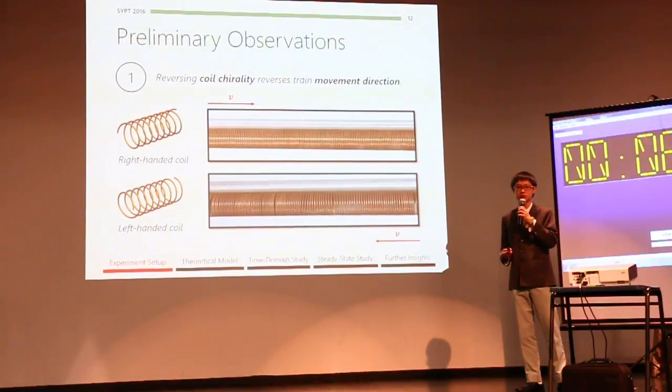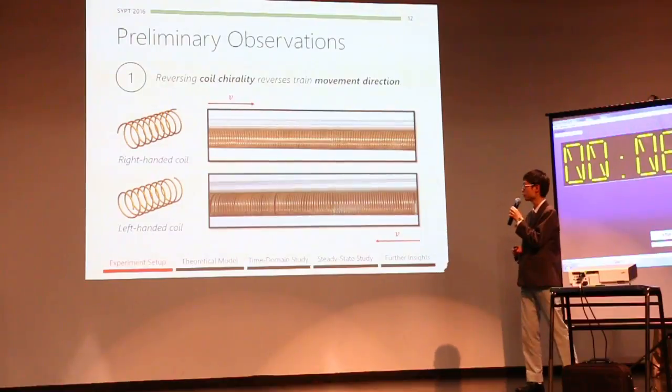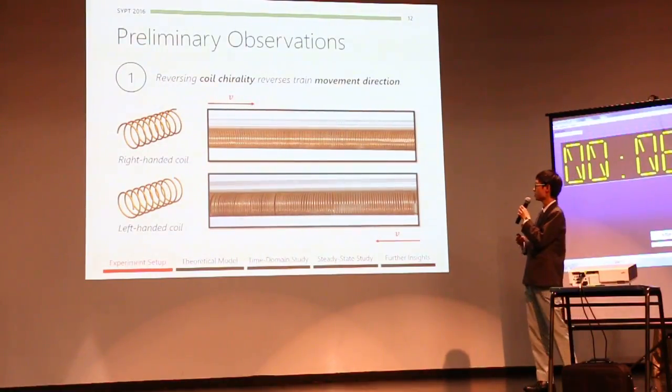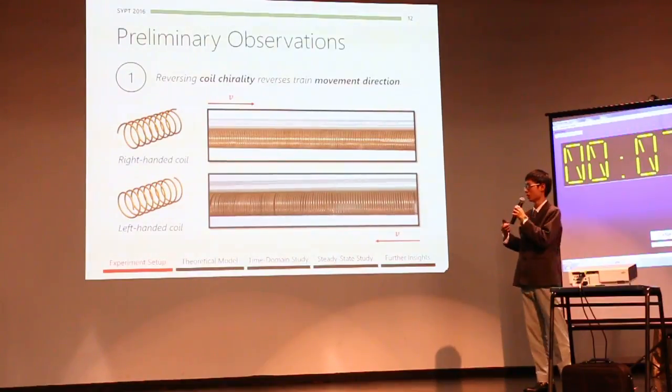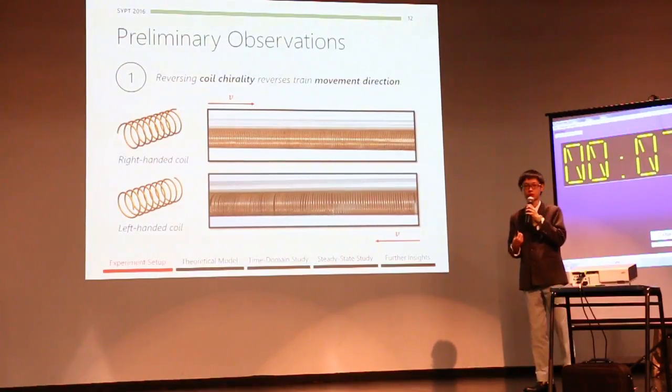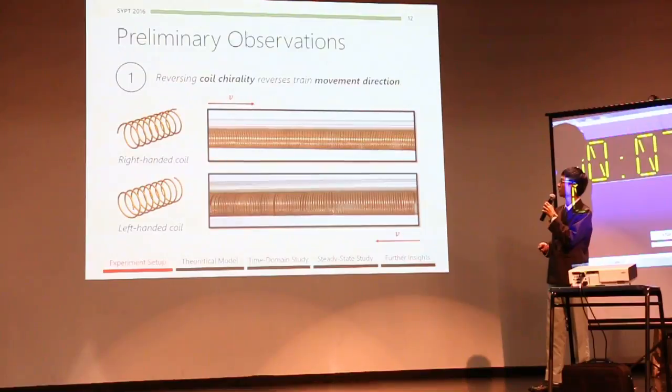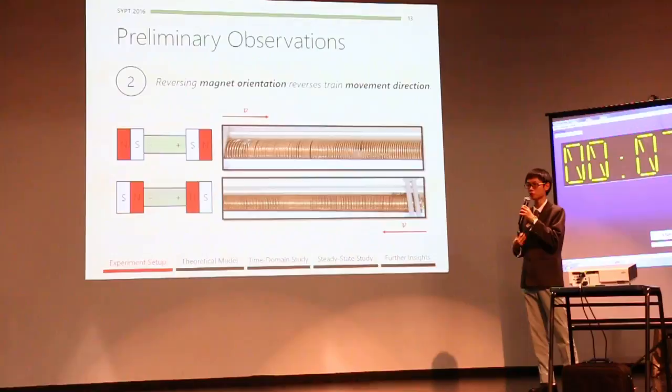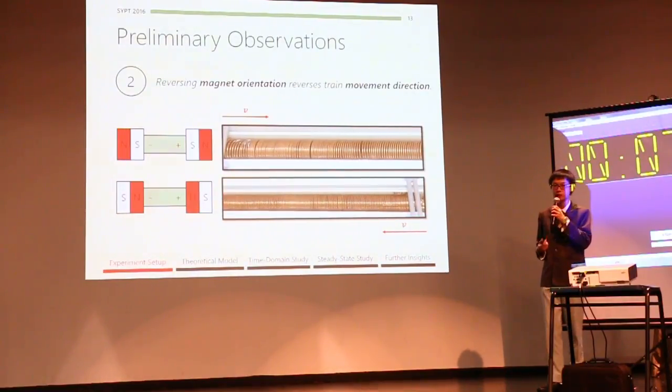So we will now present some key observations that are important to our theoretical formulation later on. Now we note that reversing coil chirality reverses the train direction, and this tells us that the coil currents affect the propulsion force acting on our train. And next, we note that reversing the magnetic orientation on our train also reverses the train direction, and this tells us that the driving force on our train is formed by magnetic interaction between the train's magnetic field and the coil currents.